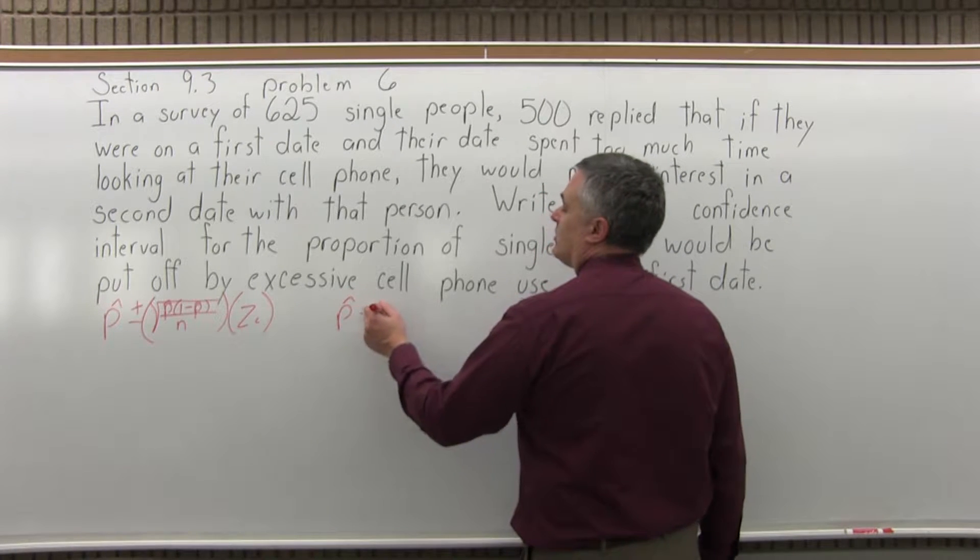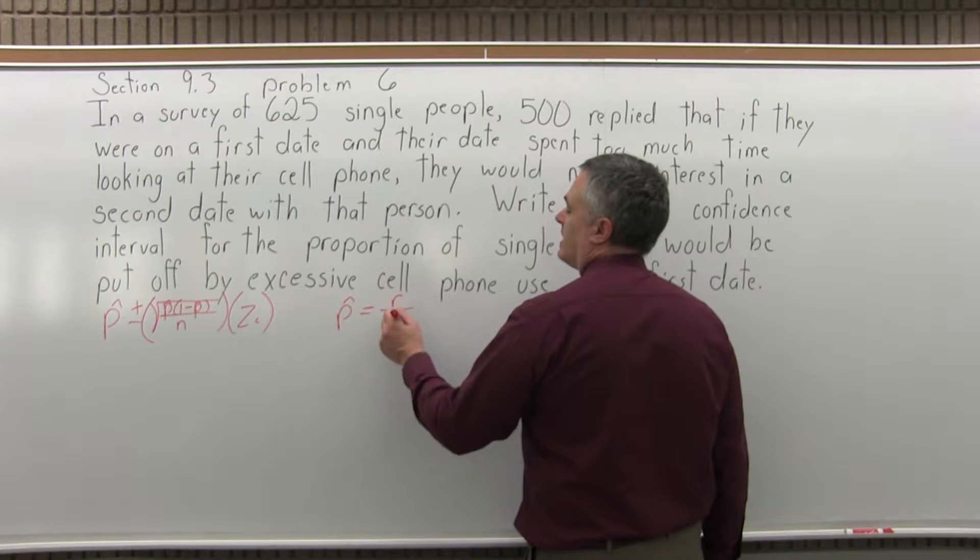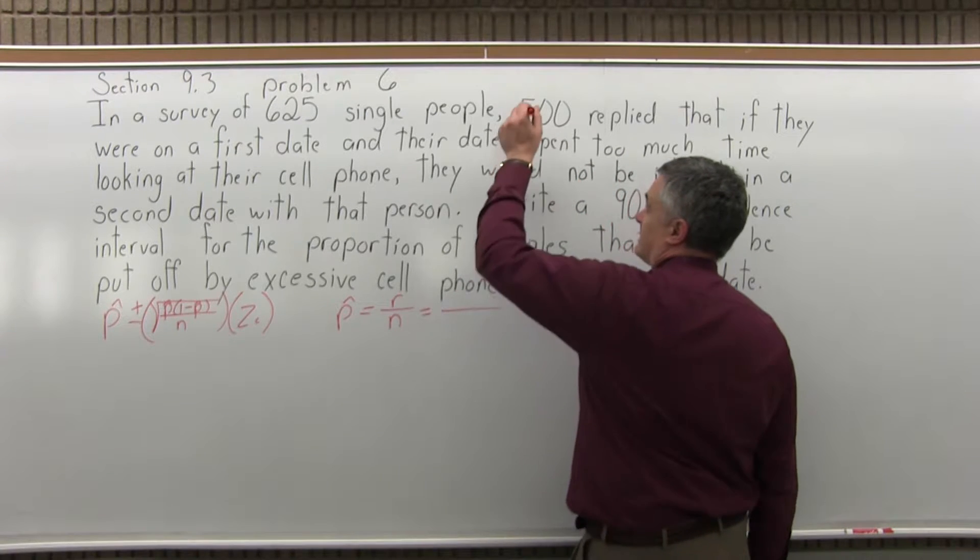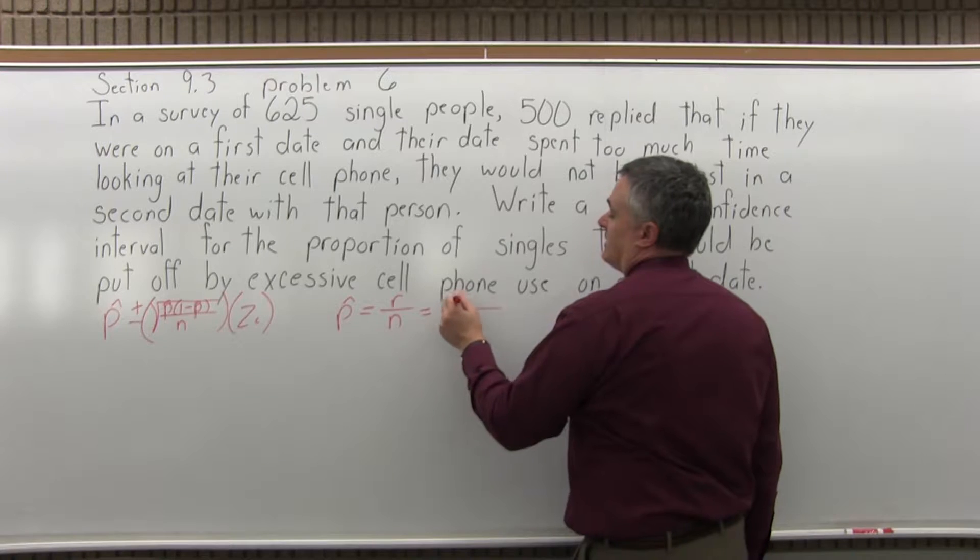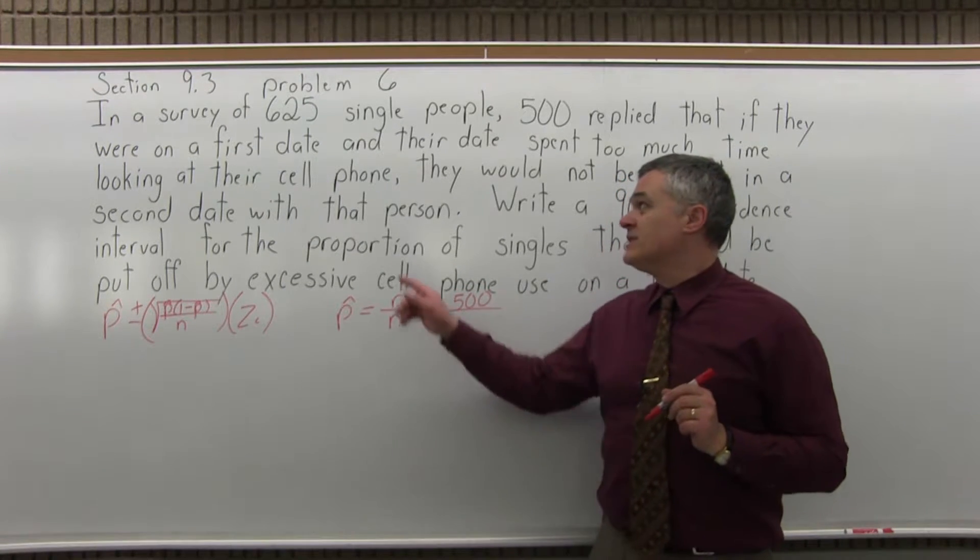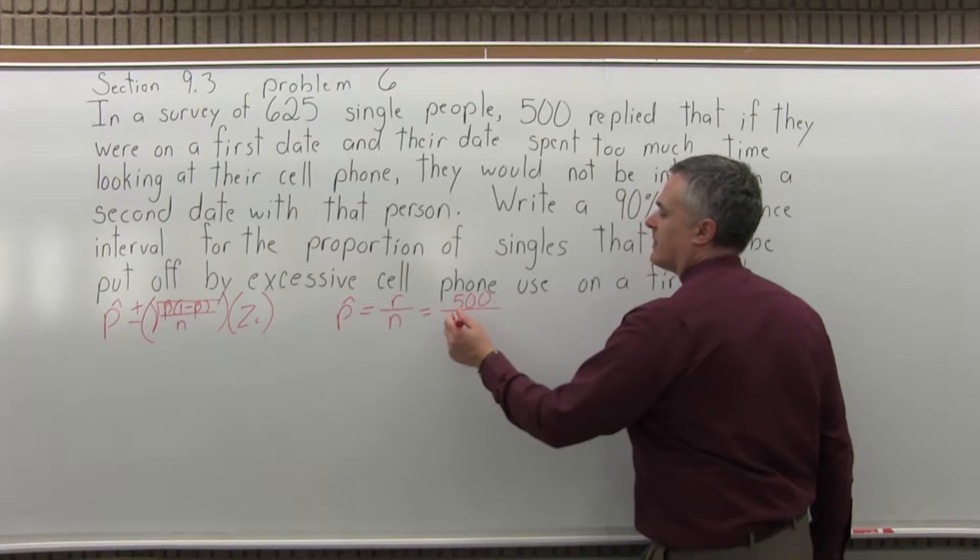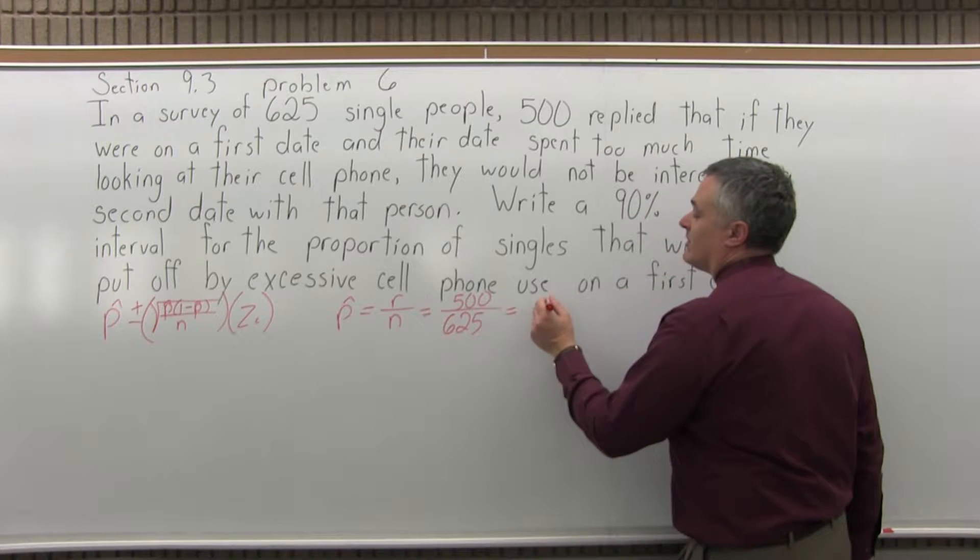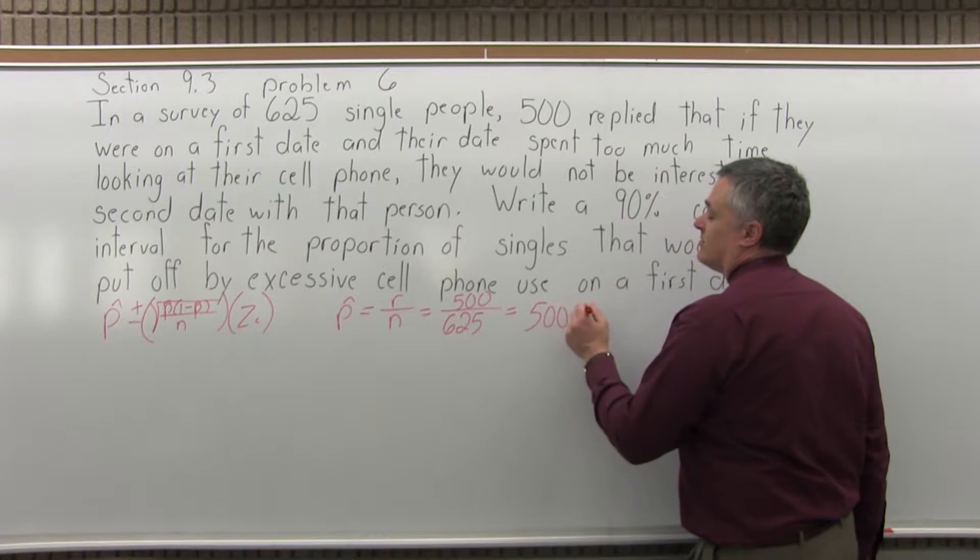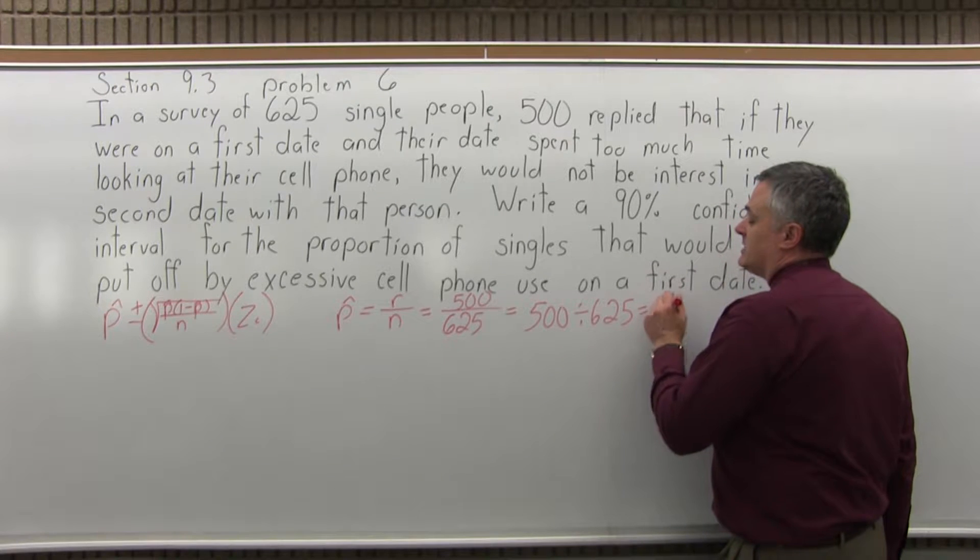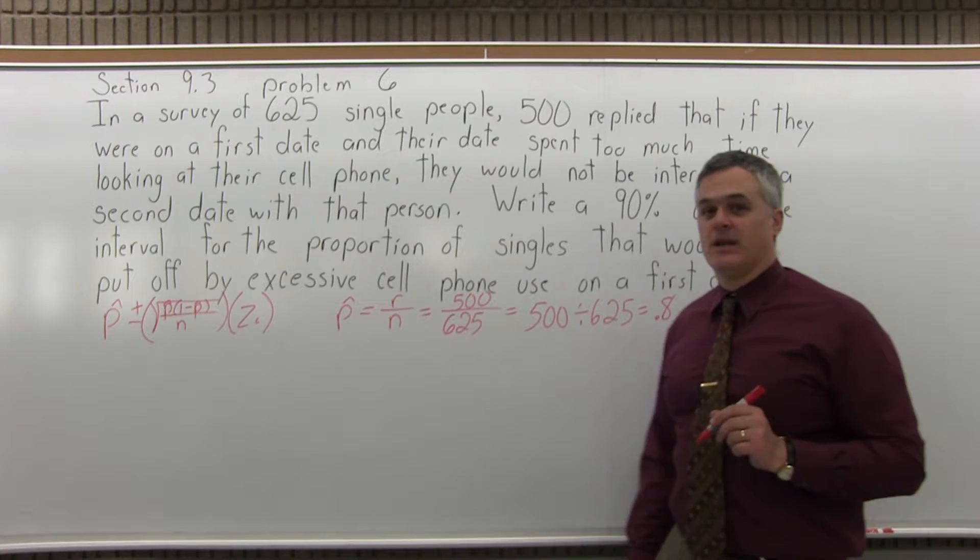So in order to fill that in, we'll need to have a value for p hat, the estimate for the population proportion. So p hat equals r over n. So r, the number of successes, in this case, the 500 people who said that too much looking at a cell phone would be a deal breaker, over the 625 people that were surveyed. And if you run it through your calculator, 500 divided by 625 comes out to a fairly manageable decimal of 0.8, which is good.